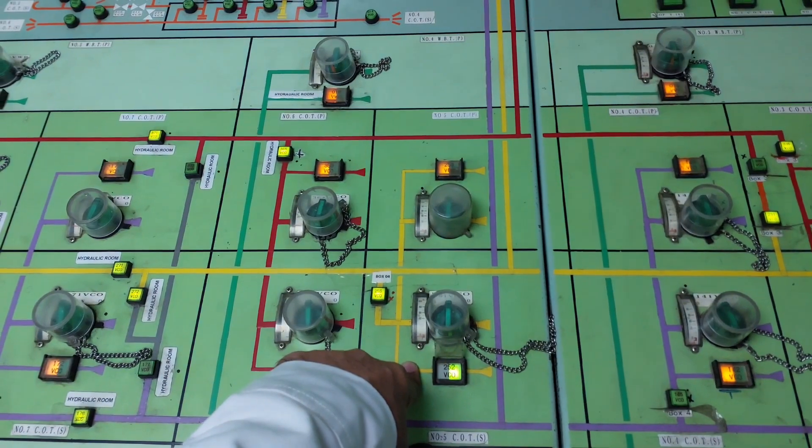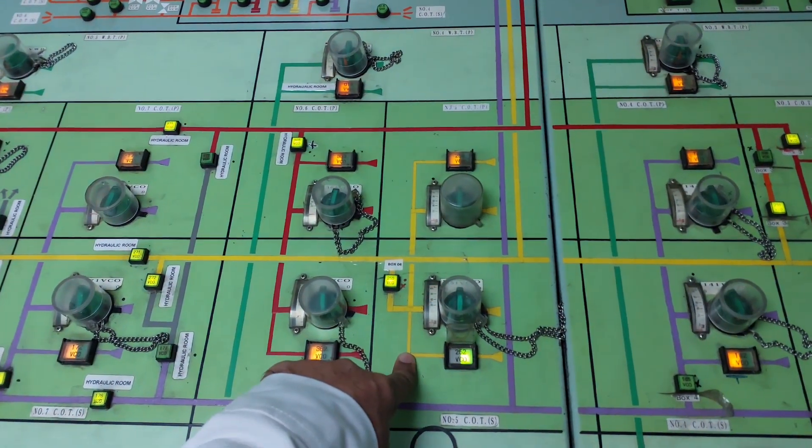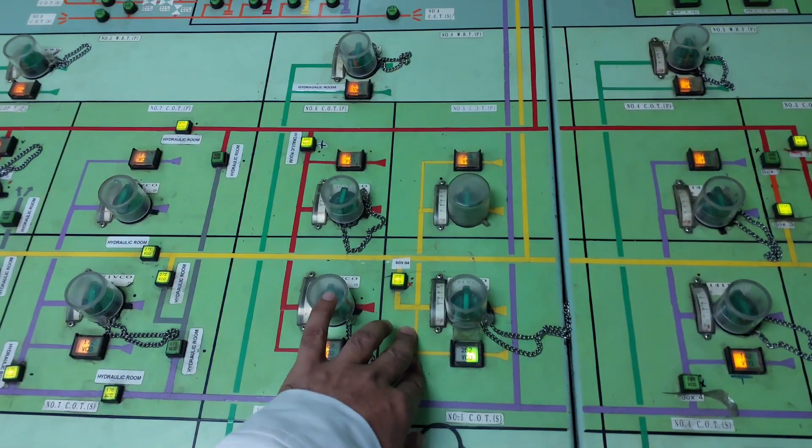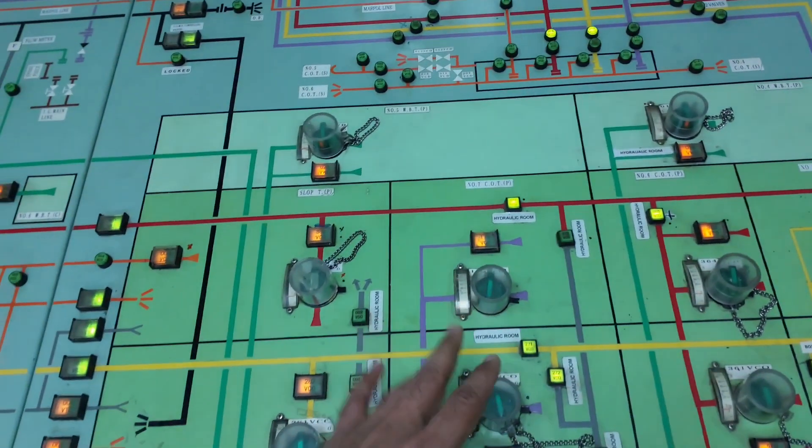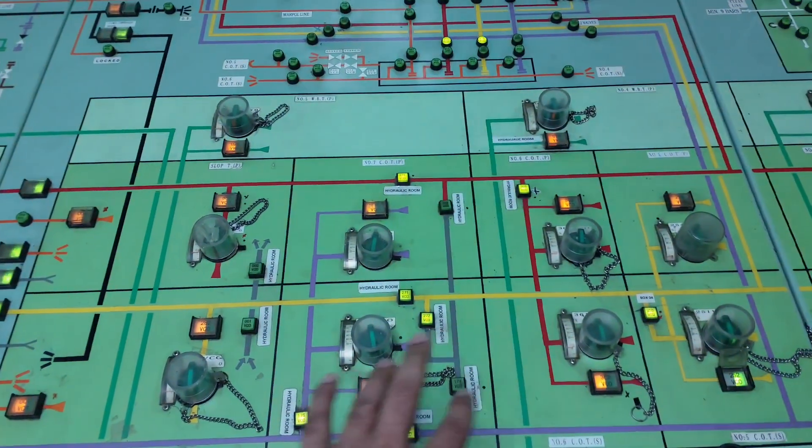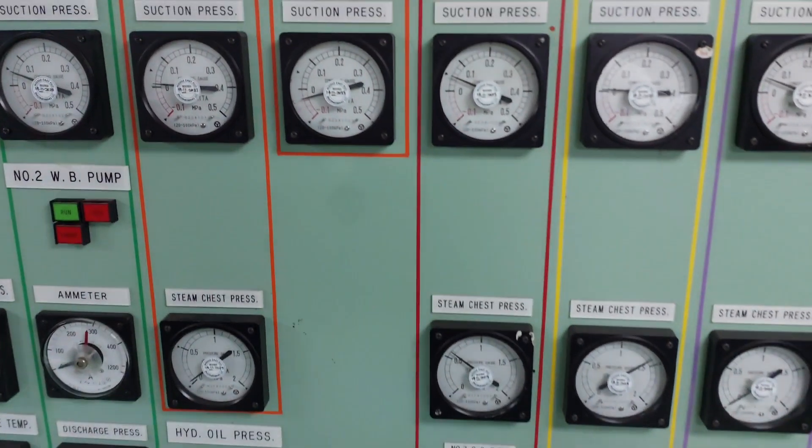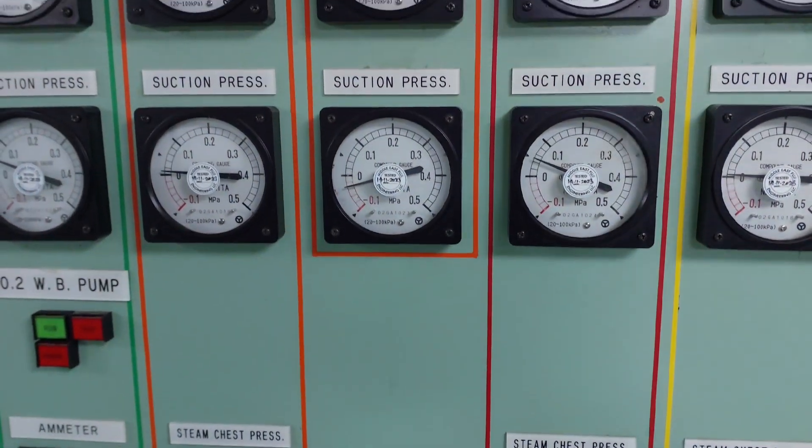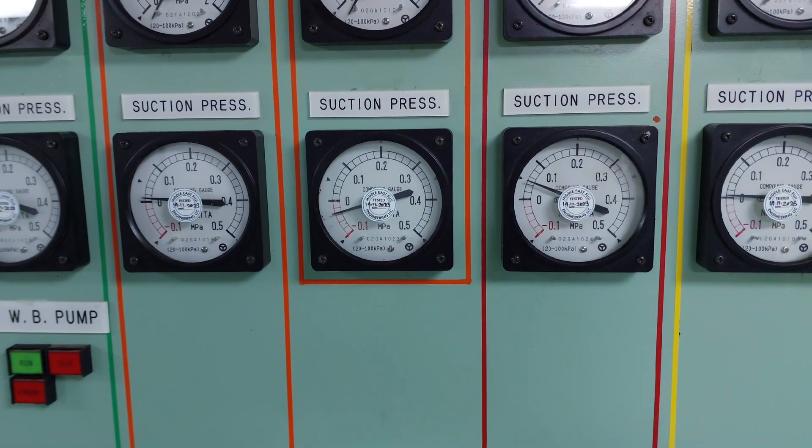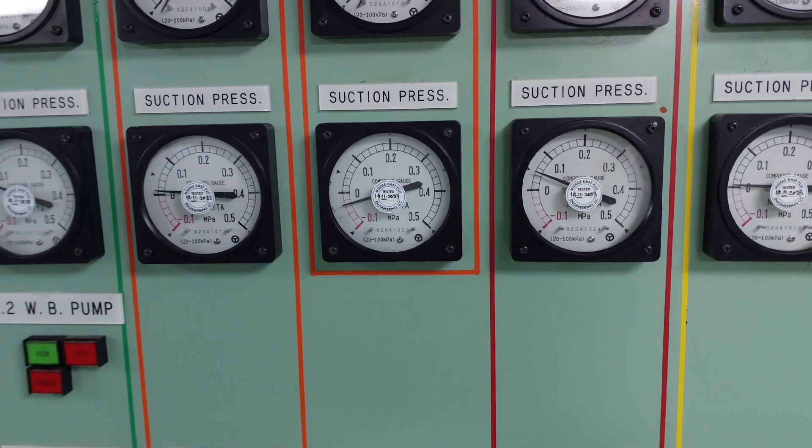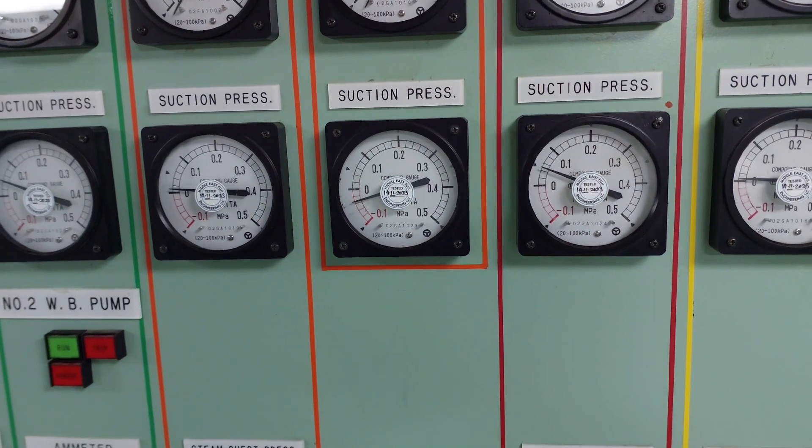When number five starboard tank is complete, means there's no cargo to strip. To know how the stripping is completed, you will see in the eductor, the suction pressure will be in the positive side or at zero. When it's in negative side, it means it's sucking the cargo. It's eductoring the cargo.